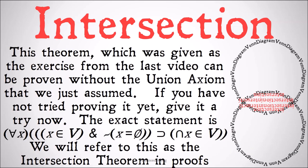This theorem, which was given as an exercise from the last video, can be proven without the union axiom that we just assumed. If you've not tried proving it yet, give it a shot. The exact statement you're trying to prove is: for all X, if X is a member of V and it's not the case that X is the null set, then the intersection of X is a member of the universe — in other words, the intersection of X is a set. We're going to refer to this as the intersection theorem in proofs.